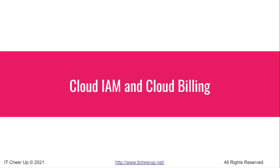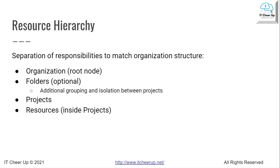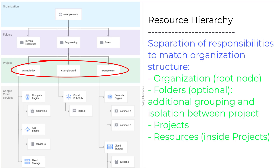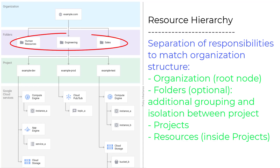The first topic is Identity and Access Management. GCP resources are organized hierarchically. In this sample resource hierarchy, the Organization node is the root node. The projects are the children of the organization, and the other resources are the children of the projects. Each resource has exactly one parent. The Folders level is optional for additional grouping and isolating between projects.